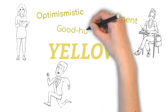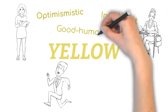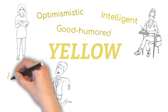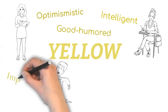The positive traits of people who love yellow are optimistic, cheerful, enthusiastic, fun, good-humored, confident, creative, challenging, and intelligent.